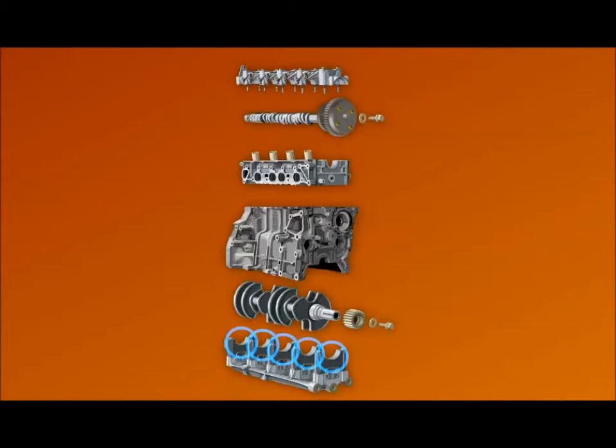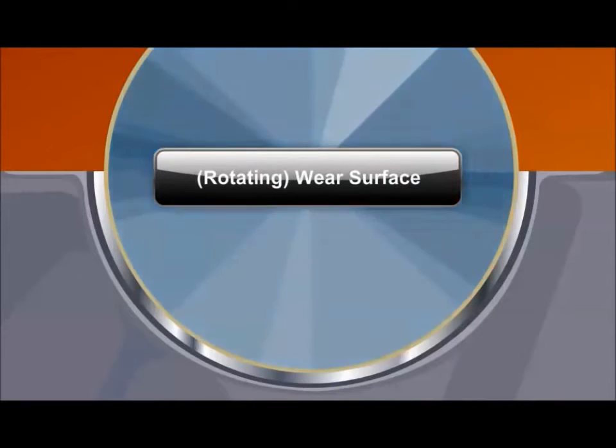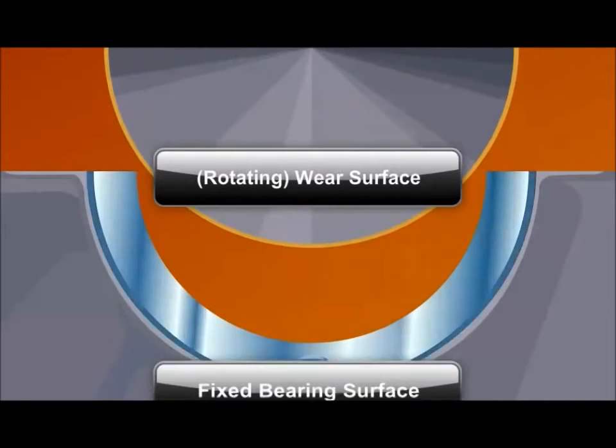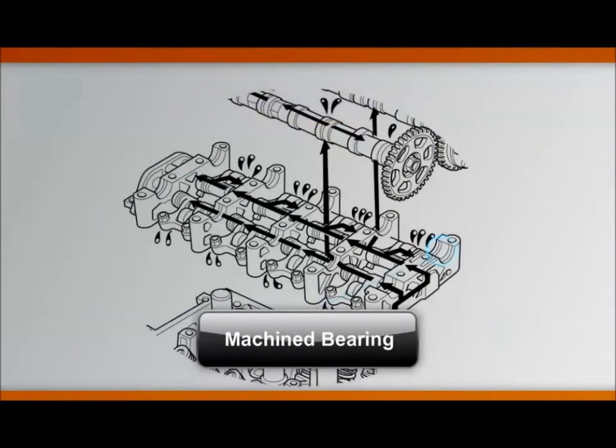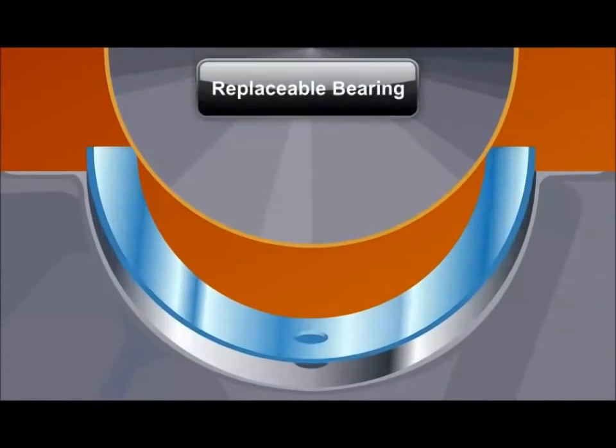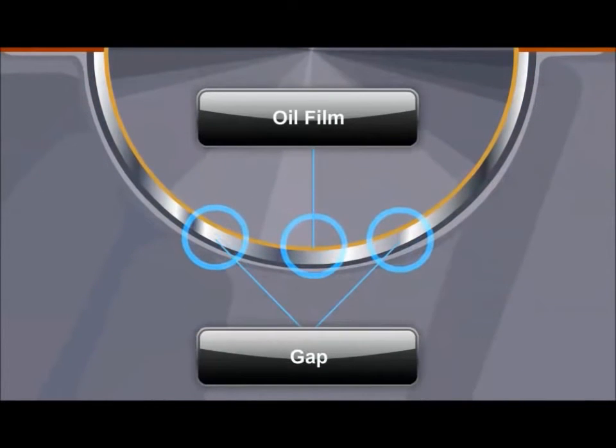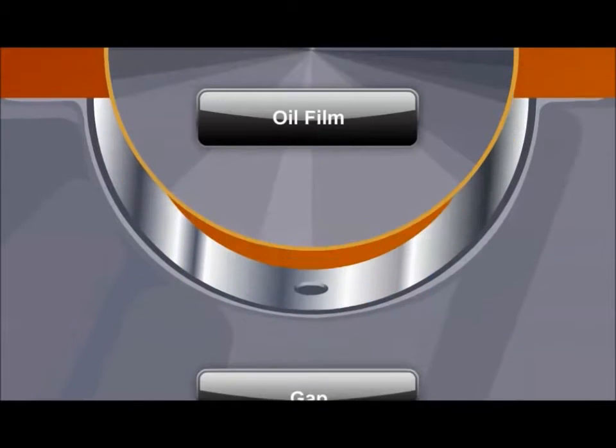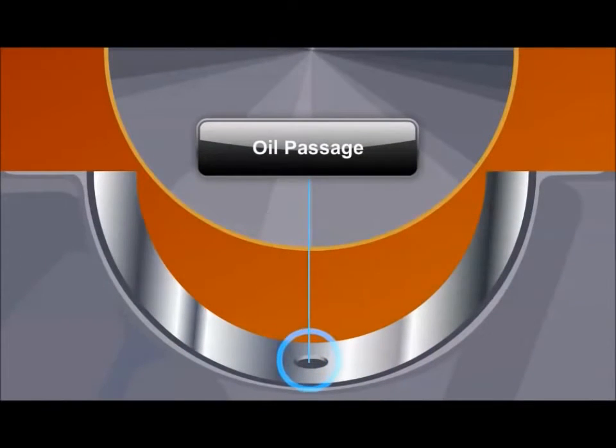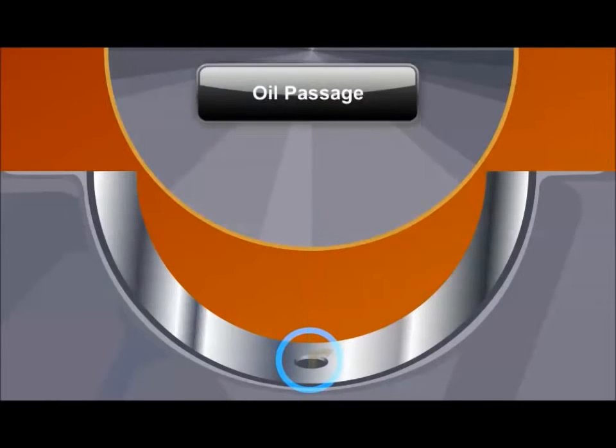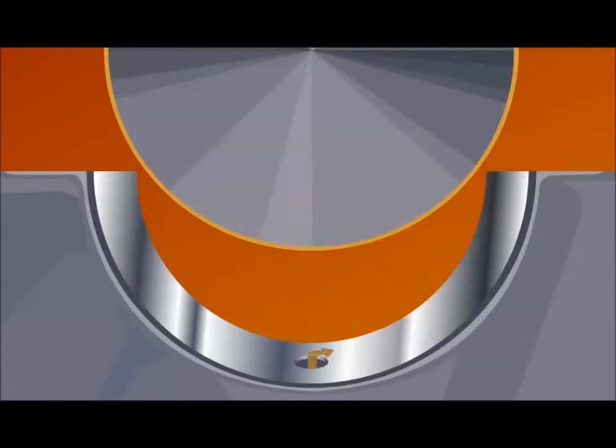Most oil passages end at a bearing. Bearings typically include a wear surface on the rotating component and a bearing surface. The bearing surface may be a machined surface on the component or a replaceable bearing shell. Between the two components, a tiny gap allows a narrow film of oil to isolate the parts. To deliver oil to this gap, bearings include a hole in their face. From this delivery point, oil fills the space between the shaft and bearing. From here, oil drains from the bearing edge and returns to the oil pan.